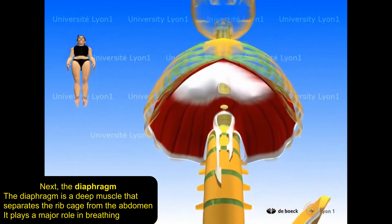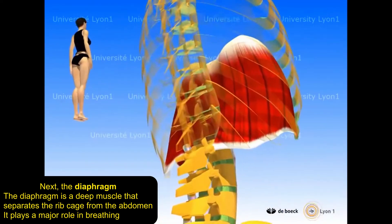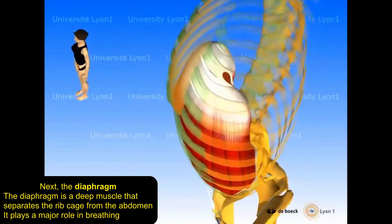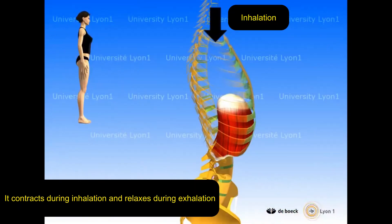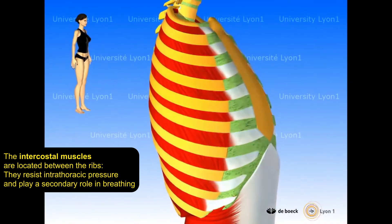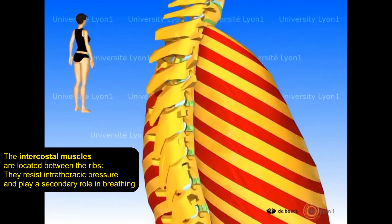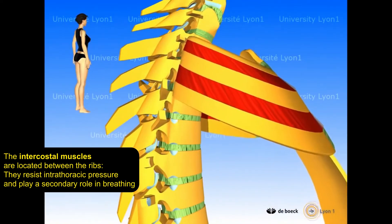The diaphragm is a deep muscle that separates the rib cage from the abdomen. It plays a major role in breathing: it contracts during inhalation and relaxes during exhalation. The intercostal muscles are located between the ribs. They resist intrathoracic pressure and play a secondary role in breathing.